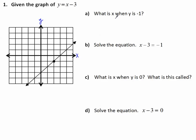Part A: What is x when y is negative 1? This is a review of how to read a graph. When y is negative 1, I look on the y-axis, going down to negative 1. Going over to the graph, here's the point where y is negative 1. I look up to the x-axis and see the x value is 2. So x is 2.